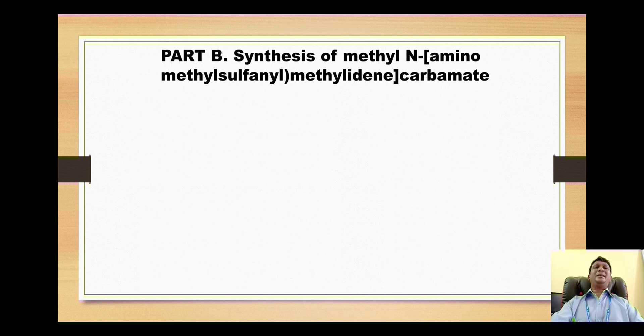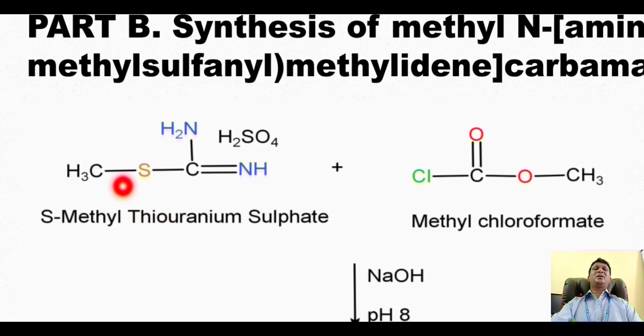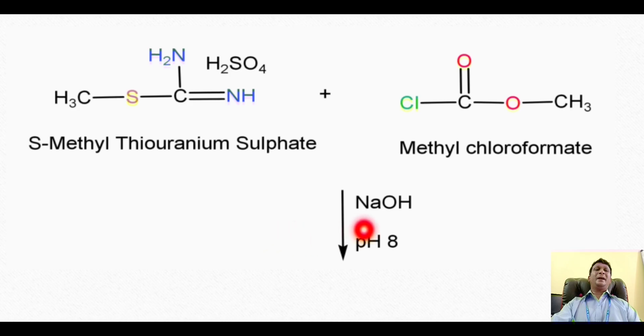Now the second part is synthesis of this methyl carbonyl carbamide derivative. Here our starting material is S-methyl-thiouronium sulfate molecule which reacts with methyl chloroformate. This amino group attacks on this carbonyl carbon to bring the nucleophilic acyl substitution reaction. The hydrogen and this Cl will be released out as HCl. That's why the reaction takes place in presence of sodium hydroxide and the condition maintained at the basic pH. Sodium hydroxide is used and the basic condition favors the formation of product of this reaction.